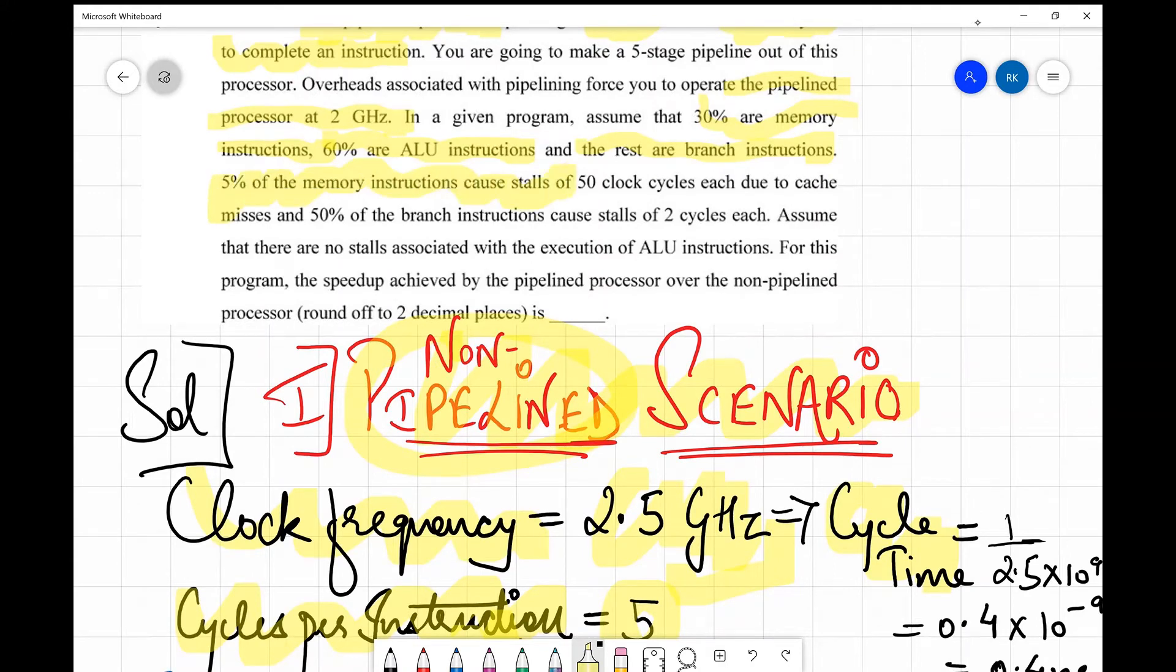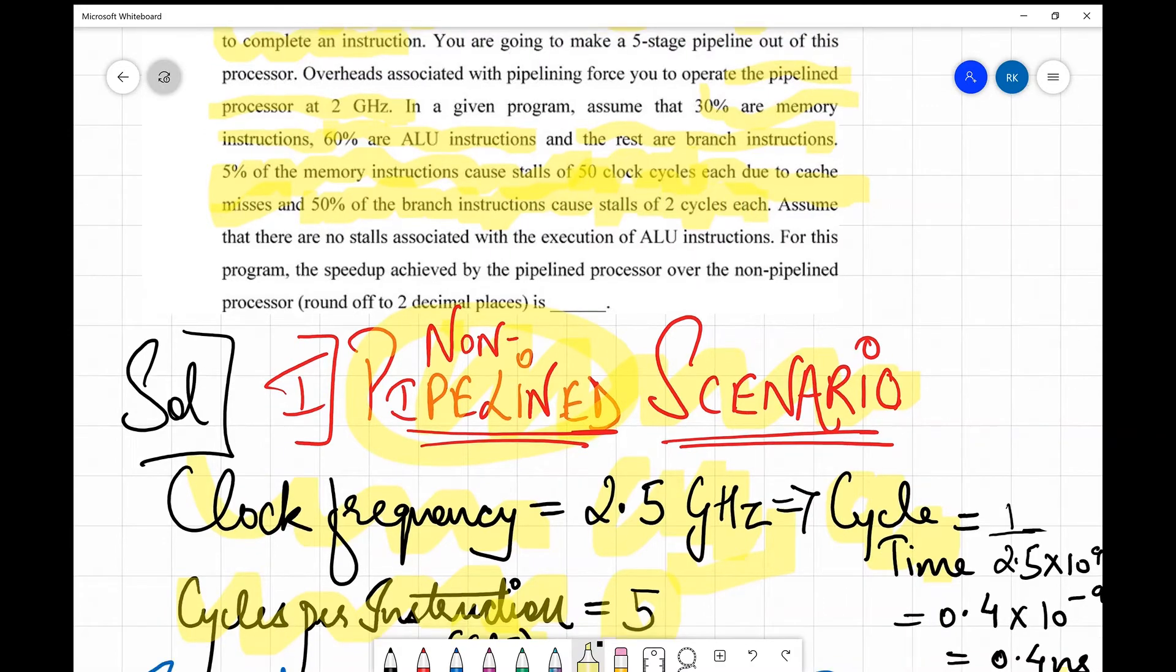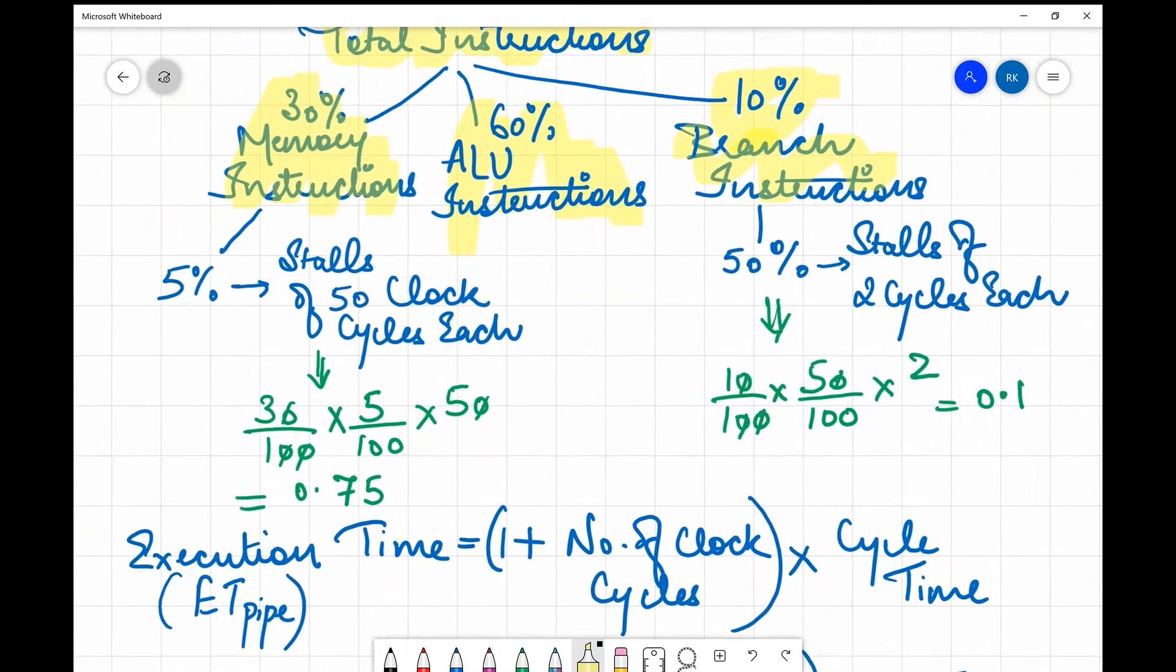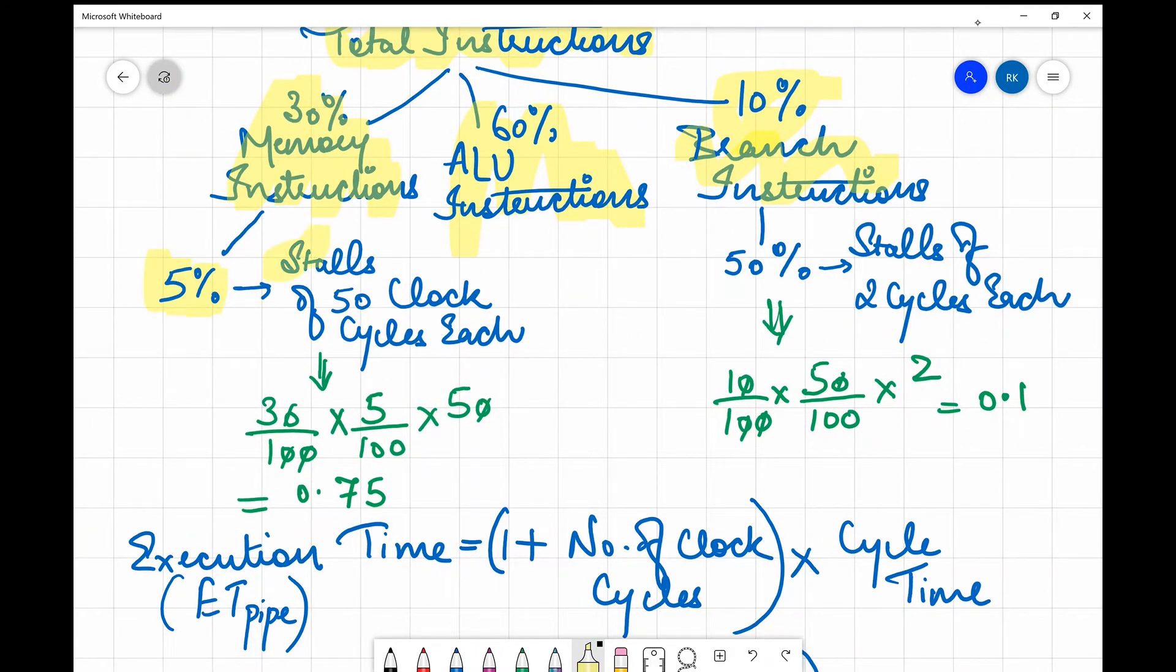They say 5 percent of the memory instructions cause stalls of 50 clock cycles each due to cache misses, and 50 percent of the branch instructions cause stalls of two cycles each. So 5 percent of this causes stalls of 50 clock cycles each, therefore it is 30% × 5% × 50 which is 0.75. So this is the final cycles caused over here. Similarly, 50 percent of this 10 percent × 2 cycles gives you 0.1 cycles.